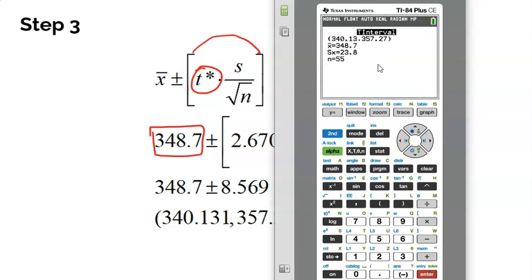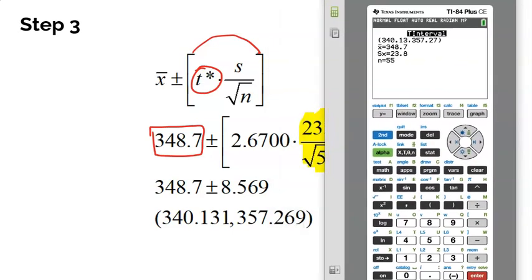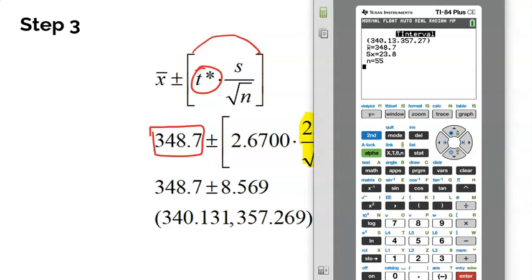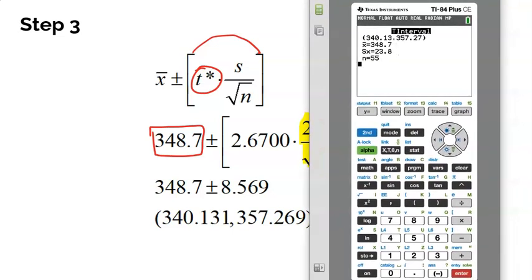And boom, there is the interval. By the way, look how close that interval is to exactly what we got. Might be off a couple decimals here and there, but that's because the calculator is not doing any rounding.